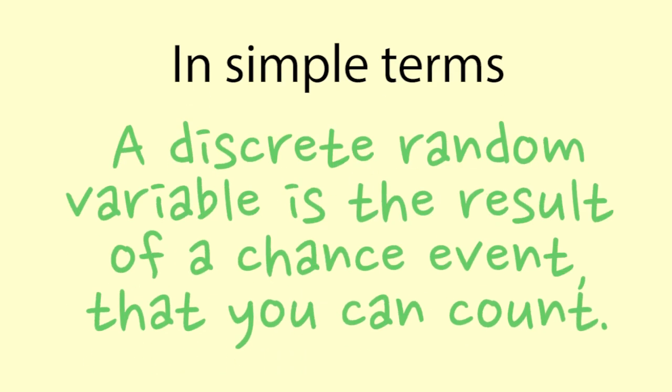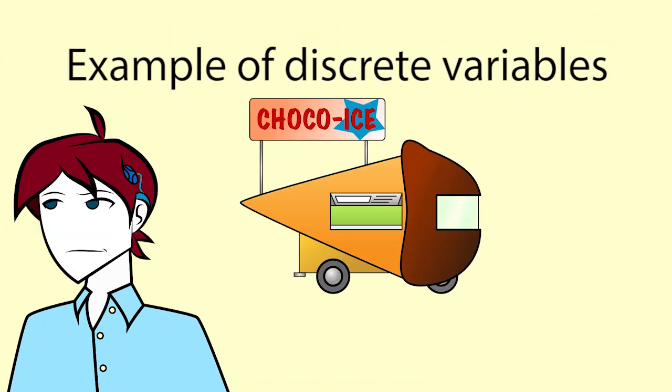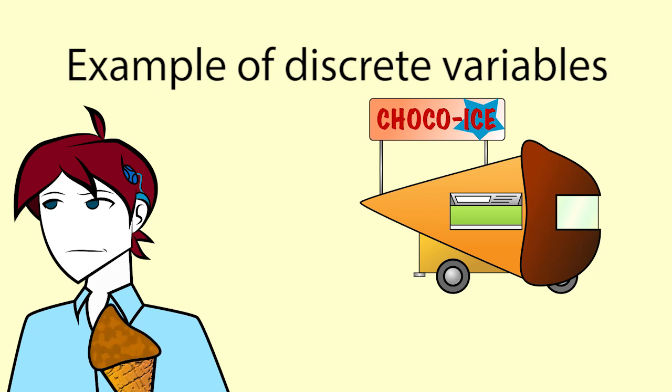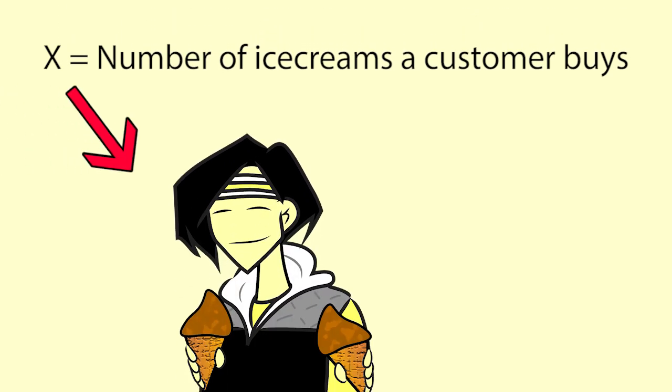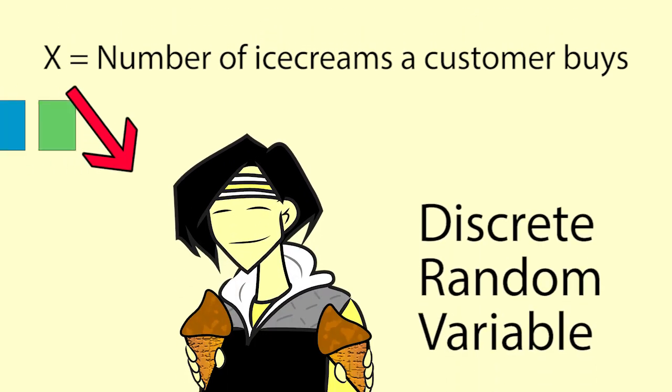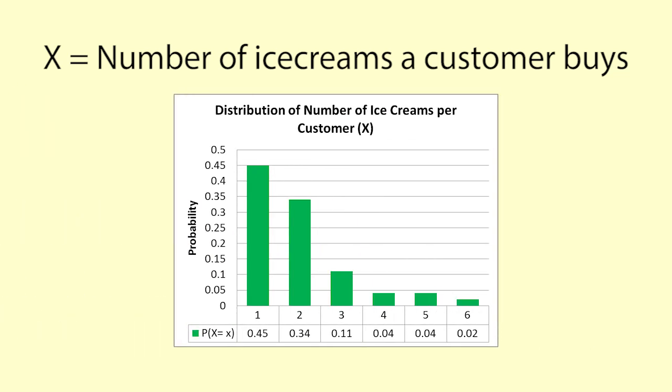A discrete random variable is the result of a chance event that you can count. Here is an example. Luke has an ice cream stand and sells hand scooped homemade ice creams and cones. We defined x as the number of ice creams a customer buys. It is a discrete random variable. The distribution for x, the number of ice creams one customer buys, looks like this.